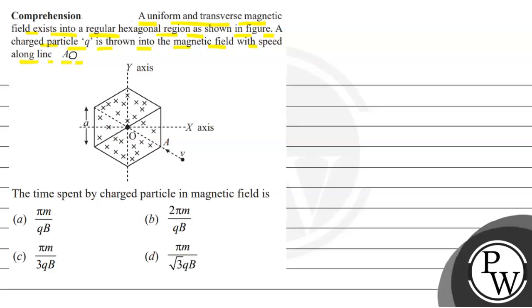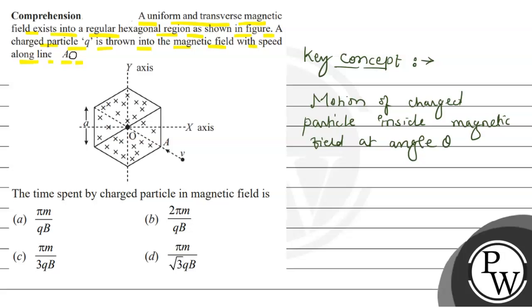I have to discuss the key concepts. Concepts we have to use here on the diagram, so it will be clear to you that when motion of charged particle inside magnetic field at angle theta, where theta is greater than 0 but less than 90 degrees.